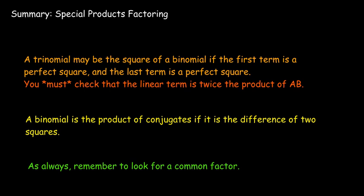So in summary, a trinomial may be the square of a binomial if the quadratic term and the constant term are perfect squares, but you have to check that linear term. And a binomial is the product of conjugates if it's the difference of two squares. And of course, we have to look for a common factor before we do anything else.